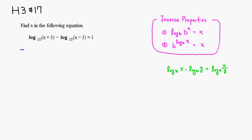So we can rewrite this equation as log to the base 10. Then since there's a subtraction, we can just write it as x plus 3 over x minus 3. This is equal to 1.